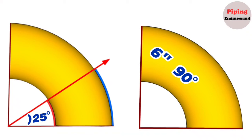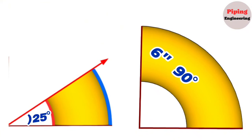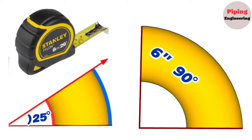In this video, we'll be showing step by step how to mark and cut a 90-degree elbow to any degree using an easy method. In previous videos, we learned how to do this by drawing a template on a workbench. Now we will learn how to mark and cut the pipe elbow using only a tape measure — specifically cutting a 25-degree elbow from a 6-inch 90-degree elbow.